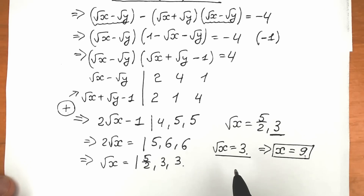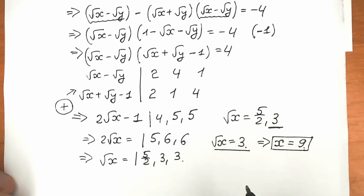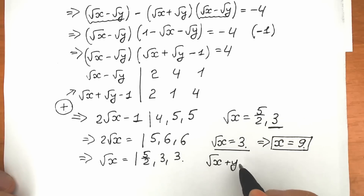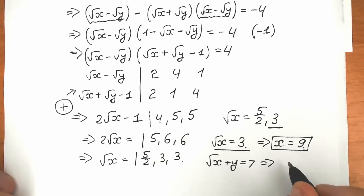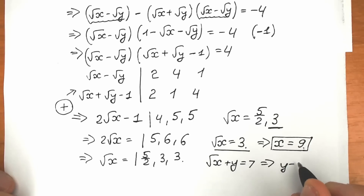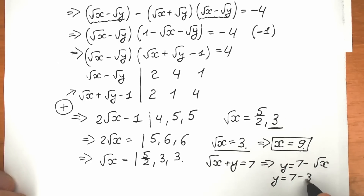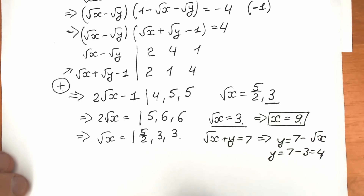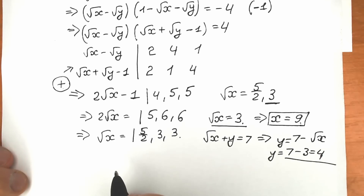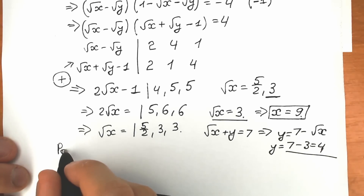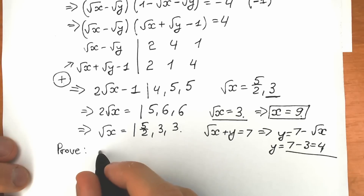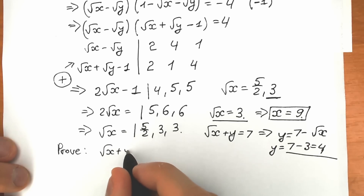Now let's find y. From the first equation, square root of x plus y equals 7, so y equals 7 minus square root of x. Substituting: y equals 7 minus square root of 9 equals 7 minus 3 equals 4. Let's write our proof and check both equations.